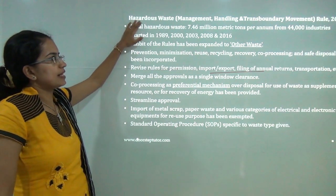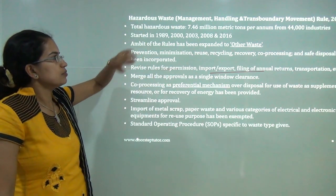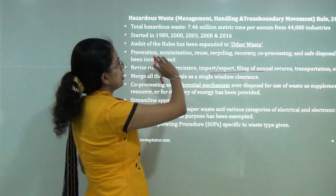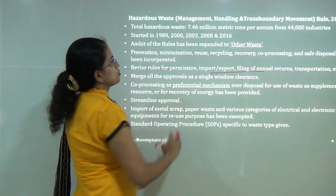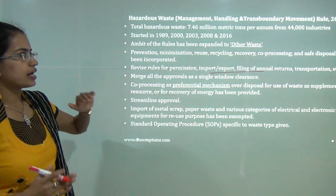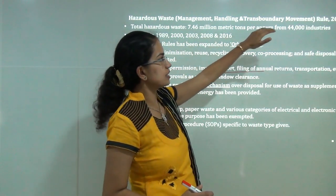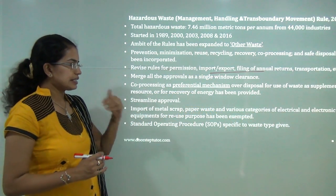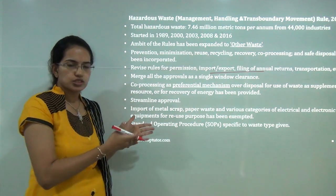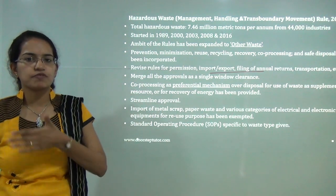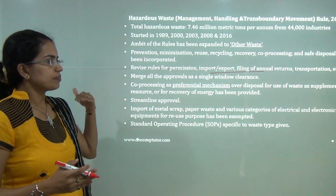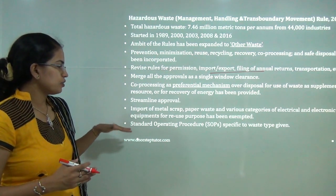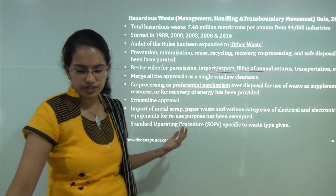The Hazardous Waste Management, Handling and Transboundary Movement Rules 2016 introduced an 'other waste' category. Previous hazardous waste acts were in 1989, 2000, 2003, and 2008. India generates on average 7.46 million metric tons of hazardous waste from 44,000 industries. The 2016 rules establish a preferential mechanism for disposal from most to least harmful, streamline processes with a single window for approvals, and provide a standard operating procedure for hazardous waste management.